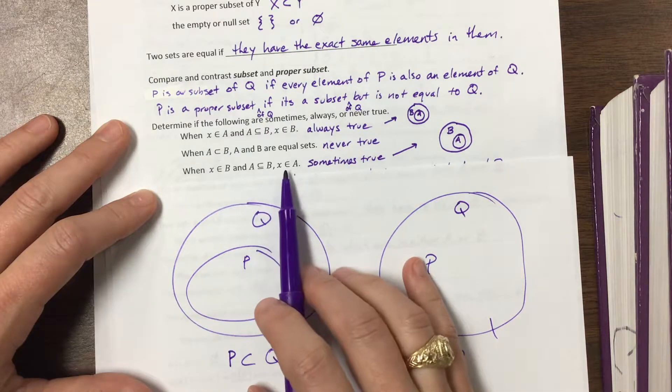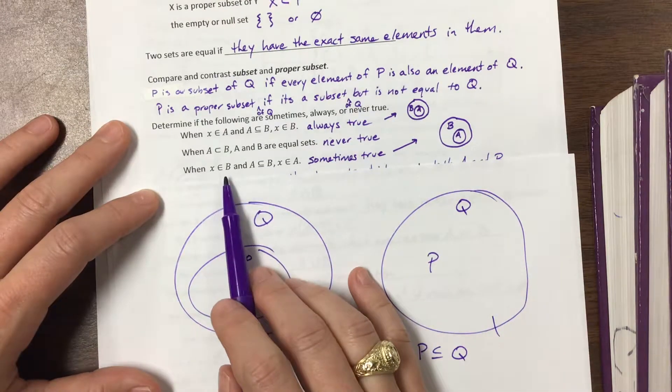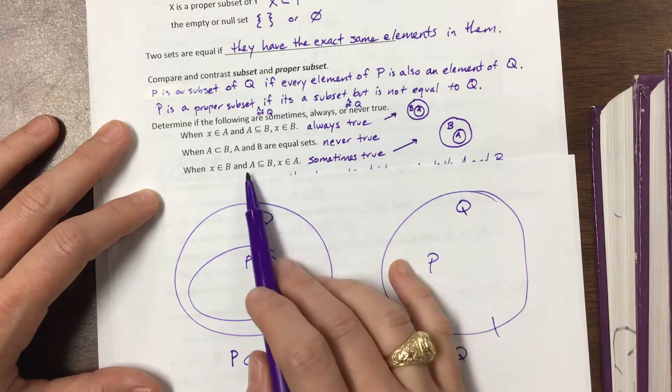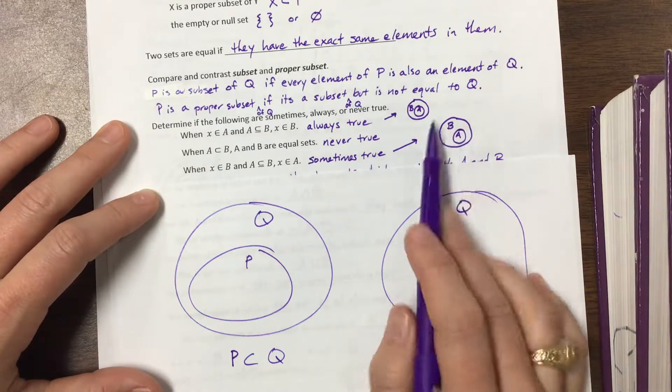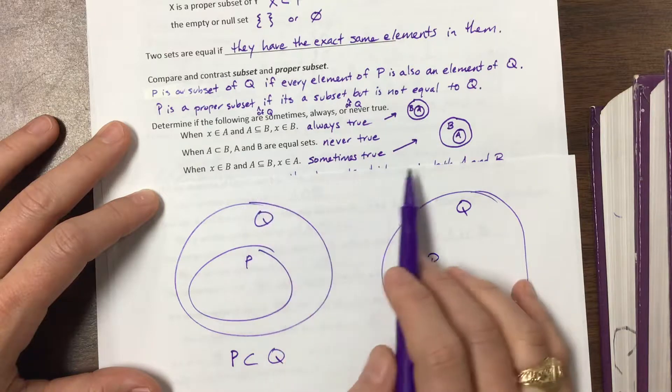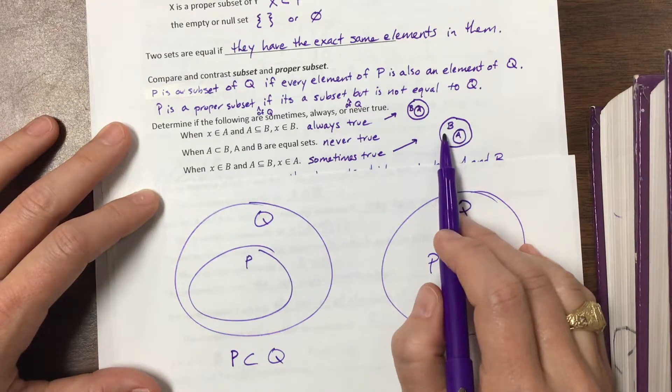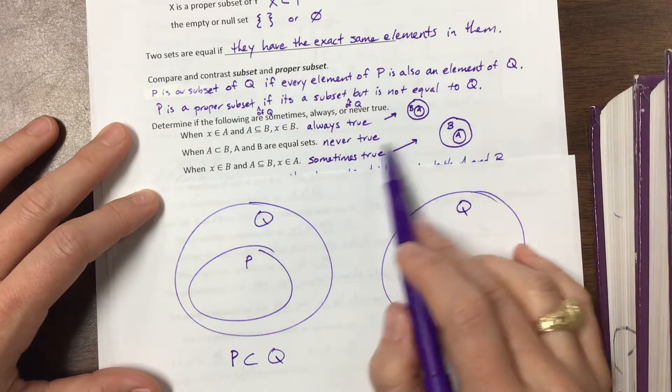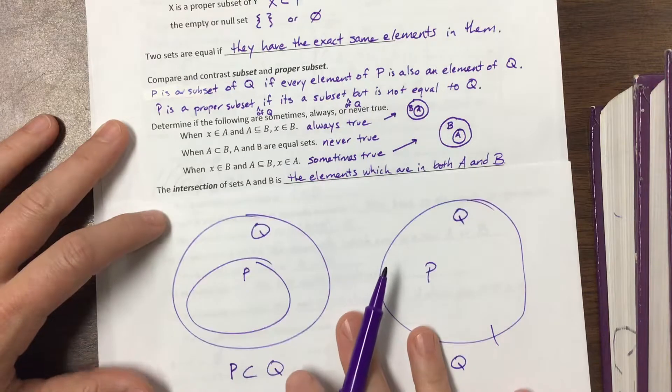The next one, when X is an element of B and A is a subset of B, X is an element of A. Well, look at this one. So X is an element in B and A is a subset of B. So A might be the same size as B, it might be smaller. We don't know because we've got both options that we can consider. Well, notice X could be out here somewhere, or X could be here. So it's sometimes true, but it's not always true.